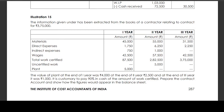For year 3, materials Rs. 31,500, direct expenses Rs. 2,250, wages Rs. 42,500, total work certified is Rs. 3,75,000. The value of plant at the end of first year was Rs. 4,000, at the end of second year Rs. 2,500, and at the end of third year Rs. 1,000. It is customary to pay 90% in cash of the amount of work certified. Prepare the contract account and show how the figures would appear in the balance sheet.